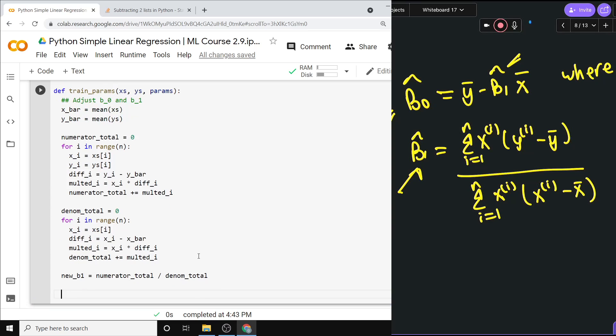And now new_beta_0 is very easy to calculate given this thing. So new_beta_0, or the beta_0 that we want, that's simply equal to y_bar minus the new_beta_1 times x_bar.